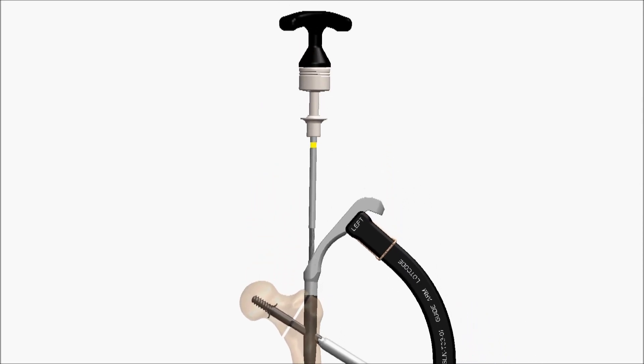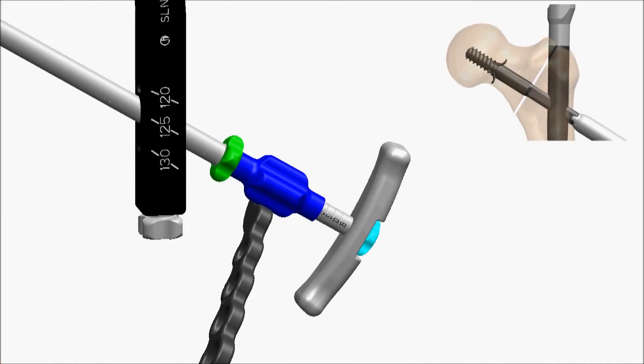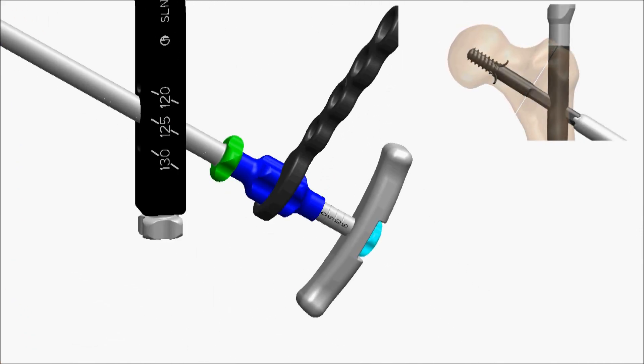Loosen the set screw one half turn. If appropriate, apply compression by turning the compression knob clockwise using the knob wrench.